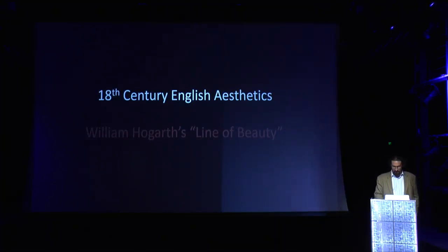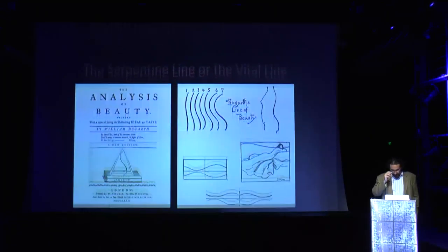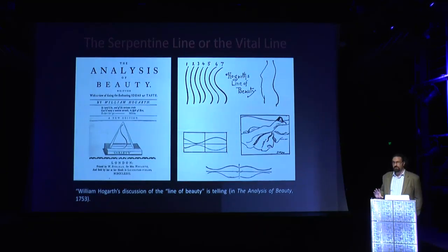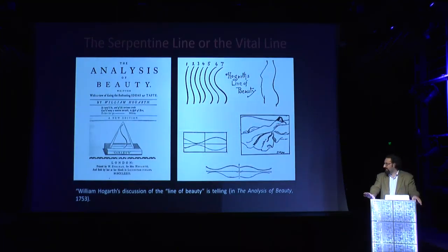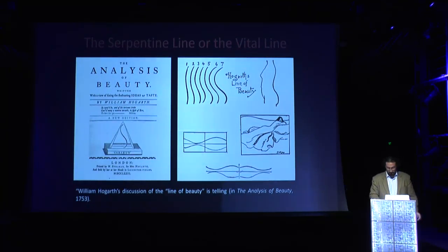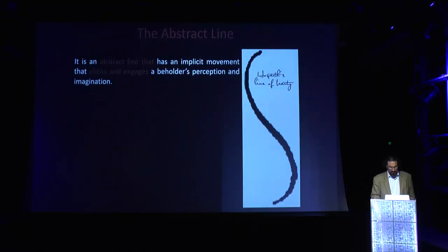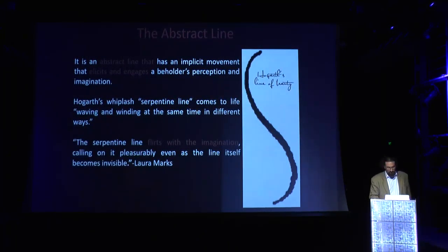In 18th century English aesthetics, I found the writings of William Hogarth on the line of beauty very stimulating. Hogarth describes the serpentine line or vital line as present in every beautiful object in nature — the most beautiful things in the world are always animated by a curved line. He notes there isn't a single straight line in nature; curved lines are the vital or serpentine lines. This abstract vital line has an implicit movement that elicits and engages a beholder's perception and imagination.